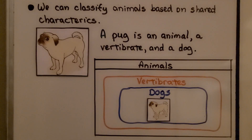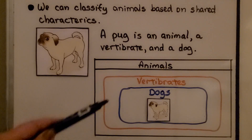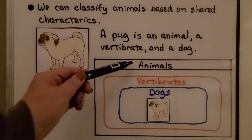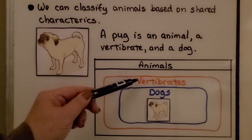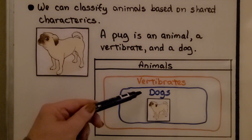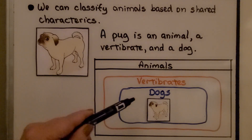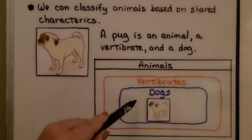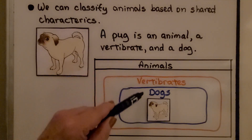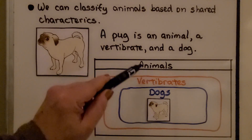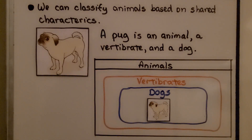We can classify animals based on shared characteristics. A pug is an animal, a vertebrate, and a dog. So it's an animal, which is a vertebrate, which is a dog — this is like a subclass of animals. It's a subset of the set of animals.